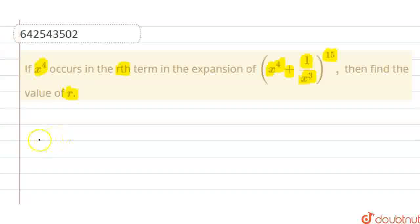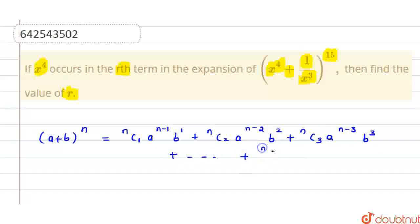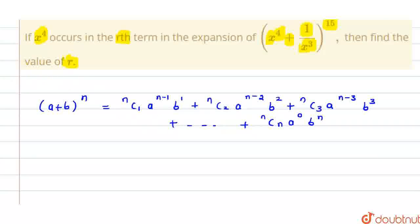First, let us write the binomial expansion of (a + b) raised to the power n. This is nc1·a^(n−1)·b^1 + nc2·a^(n−2)·b^2 + nc3·a^(n−3)·b^3 + ... up to ncn·a^n. The general term, that is the (r+1)th term, is given by ncr·a^(n−r)·b^r.